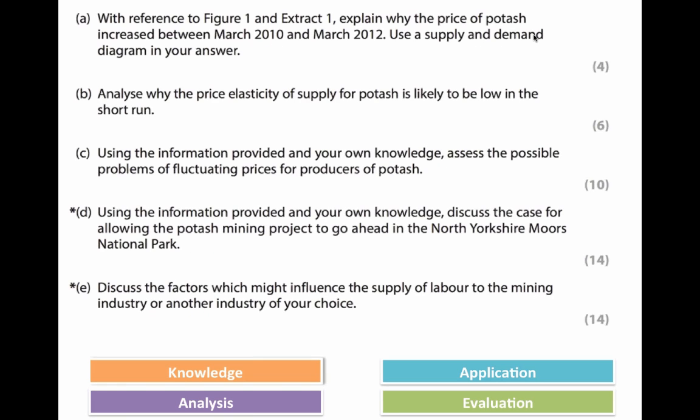So we have a question about potash — volatile prices, a major proposed mine in North Yorkshire, and the economic and social costs and benefits of that. This is an Edexcel board, slightly different if you have a different exam board. Edexcel asks five questions. We've already done the multiple choice, so this is the data response question. The first question is about cause of price movements. The second is about elasticity of supply. The third is about price volatility and why that might be a problem for producers. The fourth is the cost-benefit analysis of allowing the mine to go ahead. And the final question is about factors influencing the supply of labour to the mining industry. The asterisk next to questions D and E means you write proper paragraphs in coherent English, and that's taken into account by the examiner.